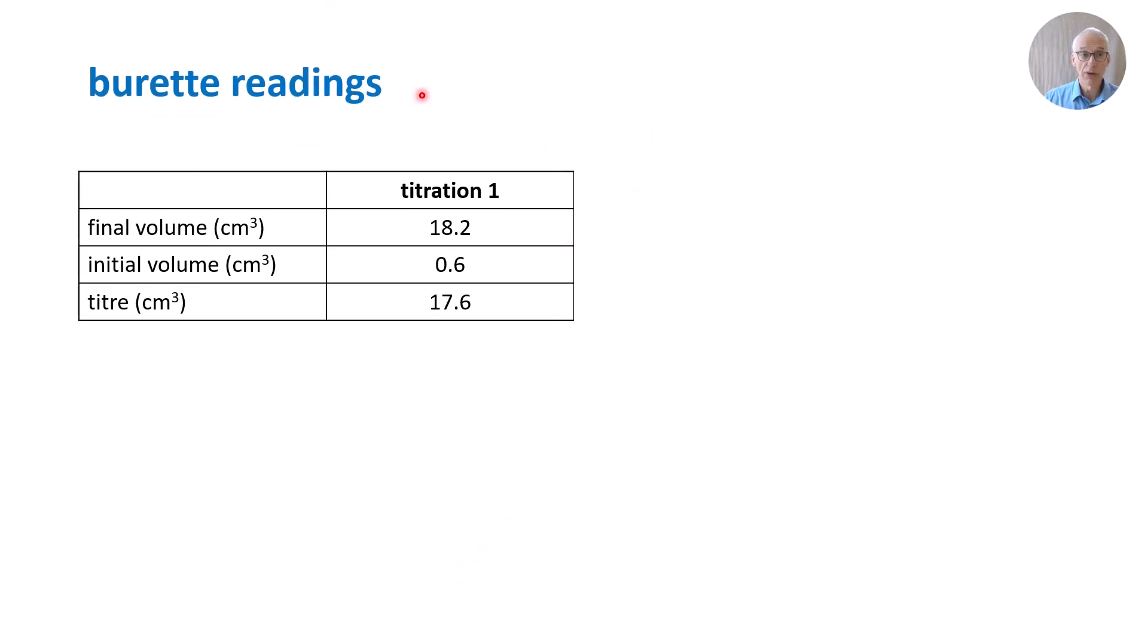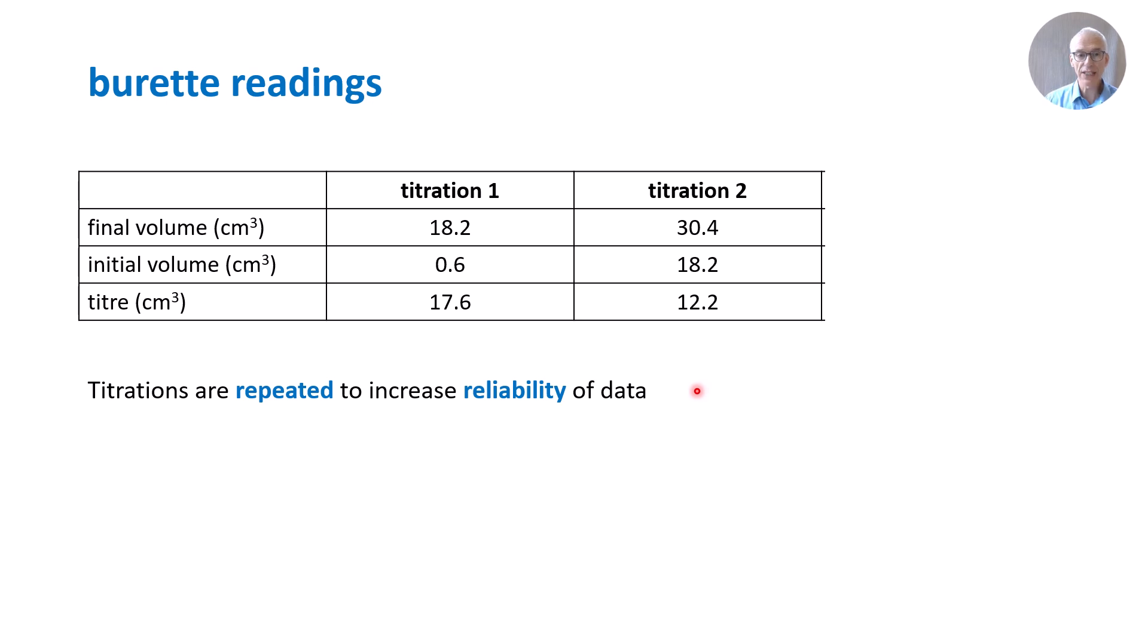Recording burette readings: Paper six normally presents the results table in this format with the final volume above the initial volume and then the volume delivered being calculated as the difference between the final volume minus the initial volume comes to 17.6 centimeters cubed. So if we start with 0.6, finish with 18.2, the volume delivered is 17.6 centimeters cubed.